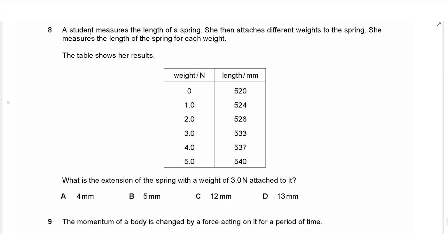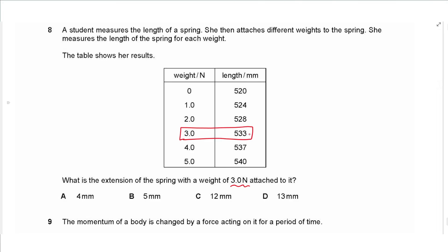Question 8: a student measures a spring's length and attaches different weights. At 3 N, the total length is 533 mm. The original length at 0 N is 520 mm. The extension is 533 − 520 = 13 mm.